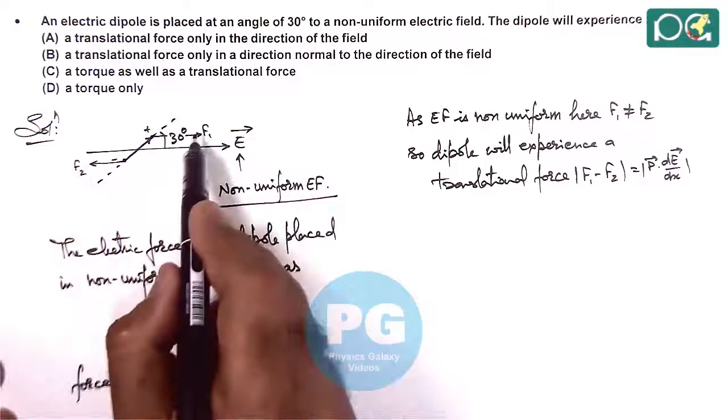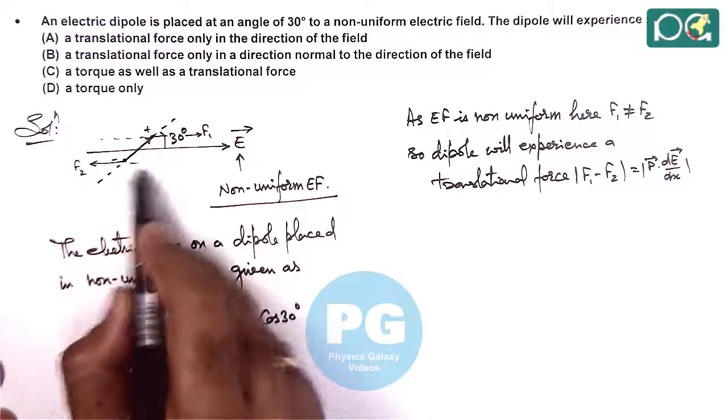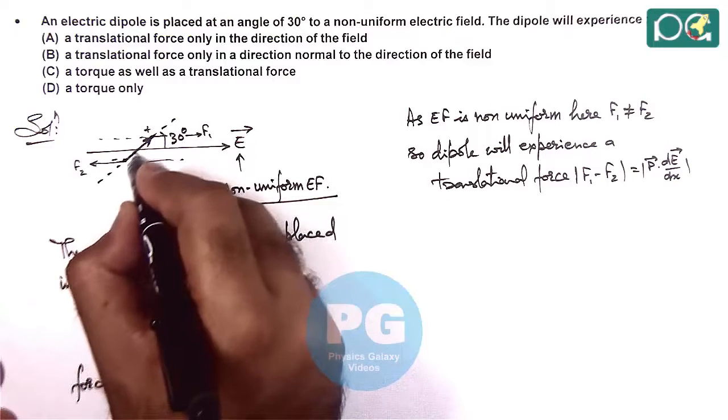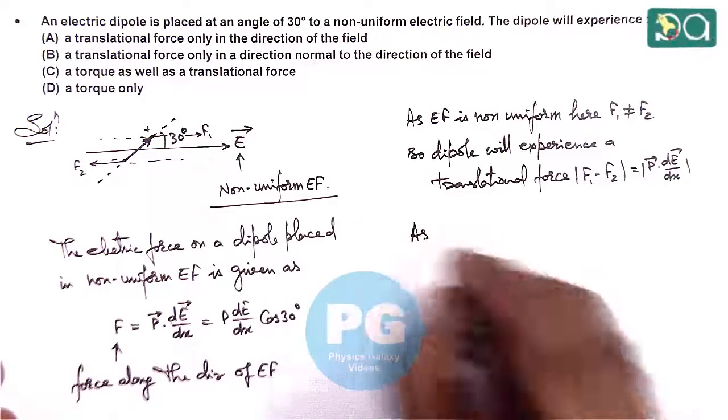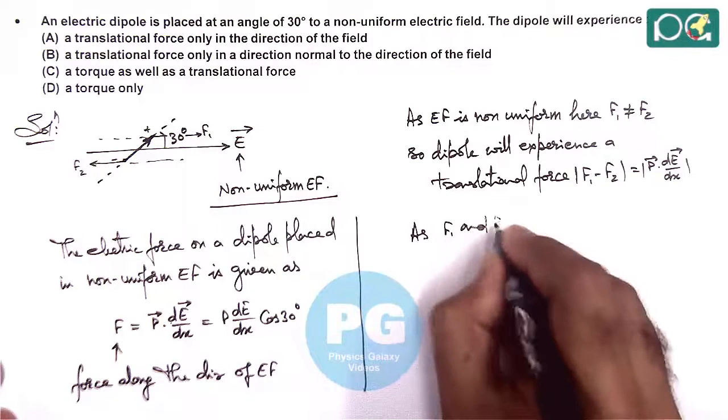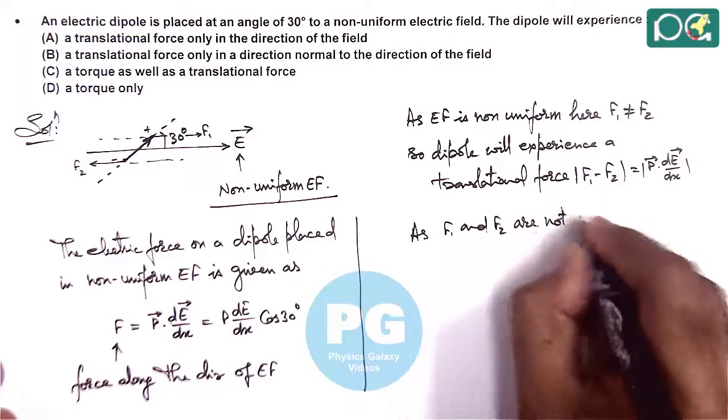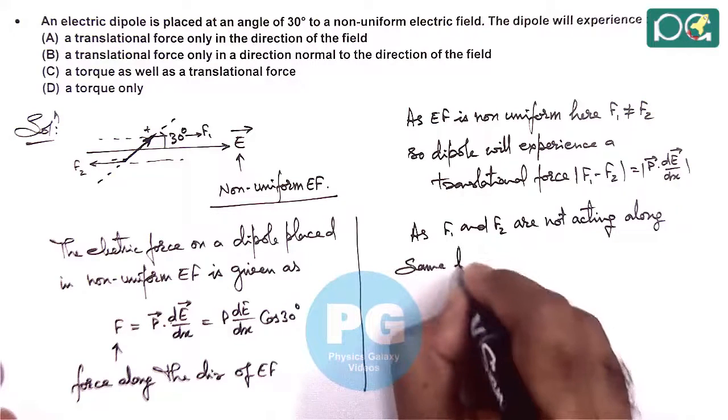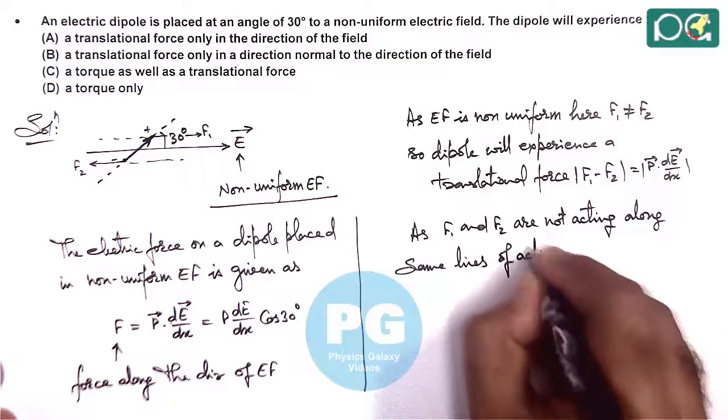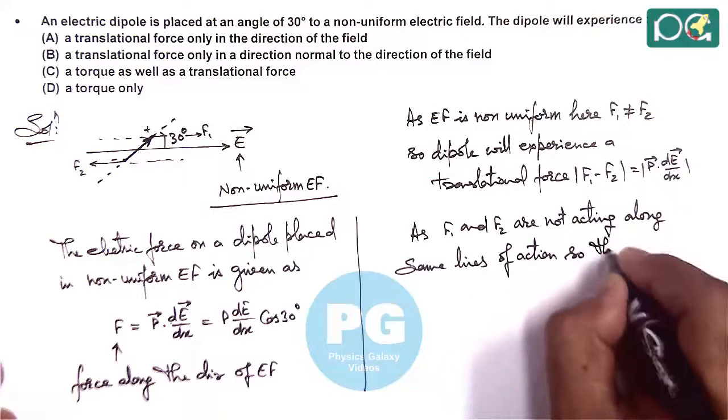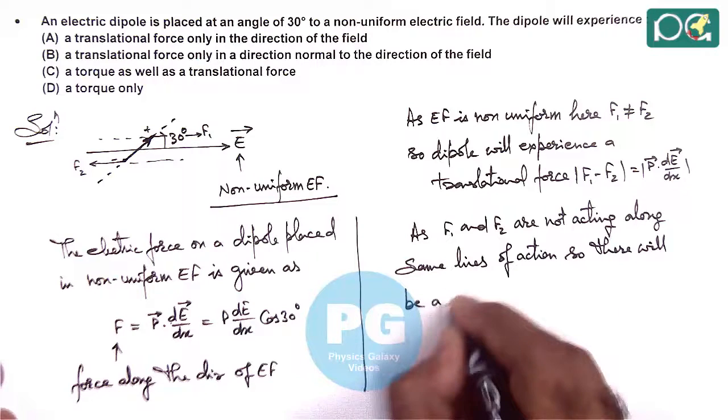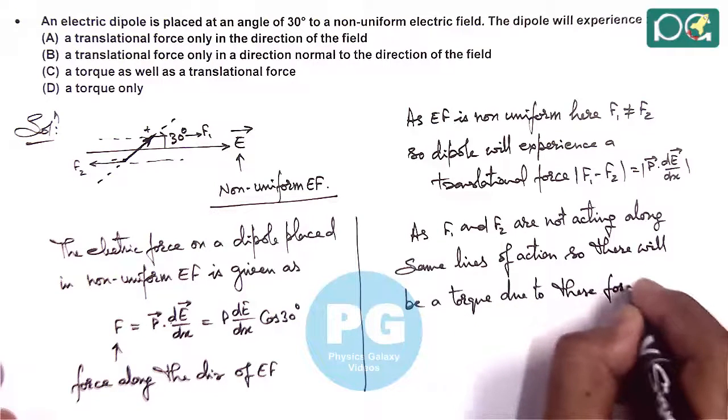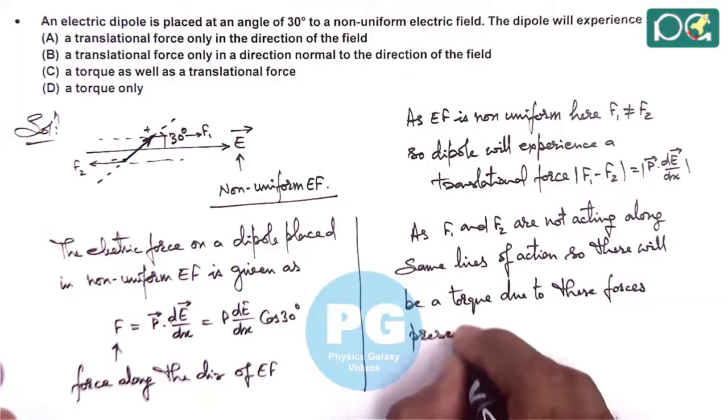Here also we can see as the two forces are not acting along the same line, they are acting along the different lines of action. So there must be a torque also which is present in this case. So we can write as f1 and f2 are not acting along same lines of action, so there will be a torque due to these forces present on dipole.